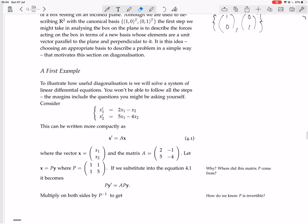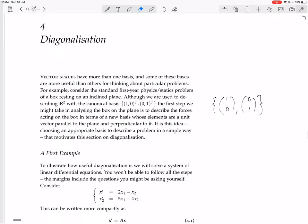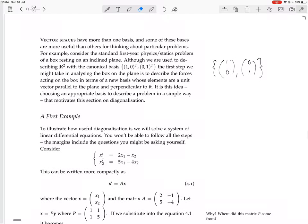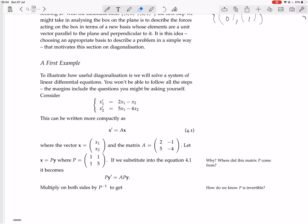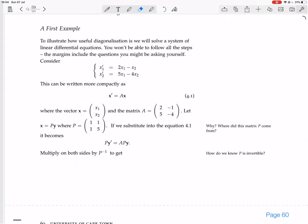Lots of the stuff in this diagonalization chapter is really cool. It's called the spectral theorem and stuff. It's about finding the spectrum of a matrix, and then you can do it for linear operators in general. Very useful in quantum mechanics. Anyway, a first example.